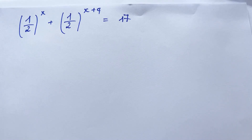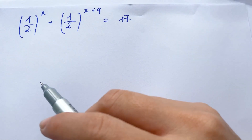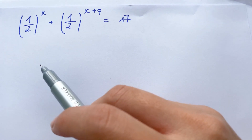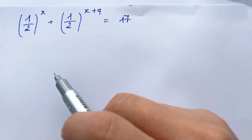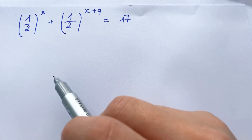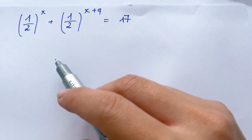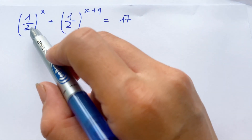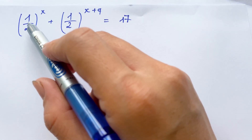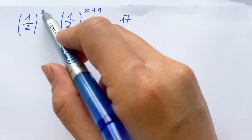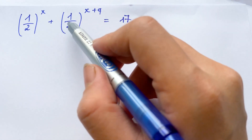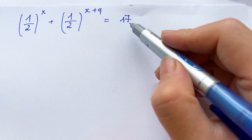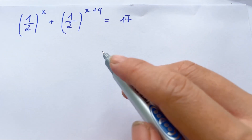Hello everyone! How to find the value of x in the equation? In the equation, everyone can see we have a^x plus a^(x+4) equals 17.